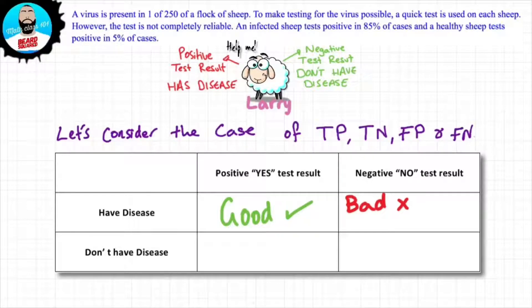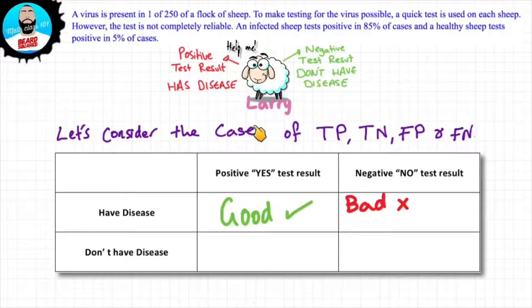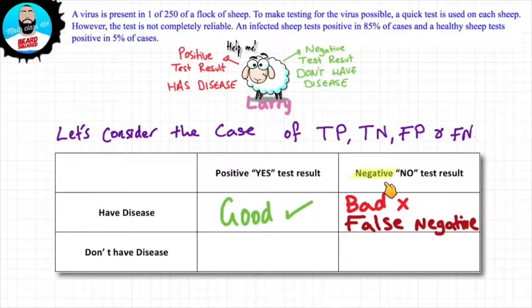Now let's say Larry gets tested and he has the disease, but he has a negative test result. That's a bad thing, because poor Larry has the disease but just doesn't know it — poor Larry doesn't know what he's in for. We call that a false negative, since it's a negative test result.